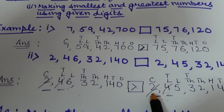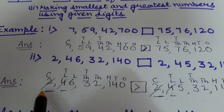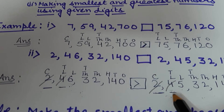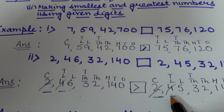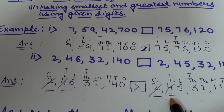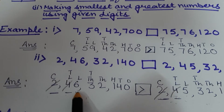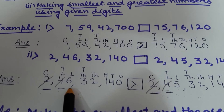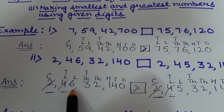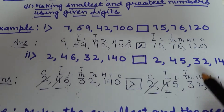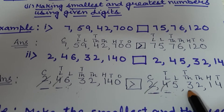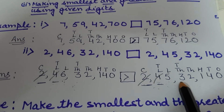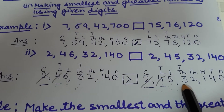So the rule is: compare place by place starting from the biggest place. If the digits at a place are the same, move to the next place. Keep going until you find a place where the digits differ — the number with the greater digit at that place is the greater number.